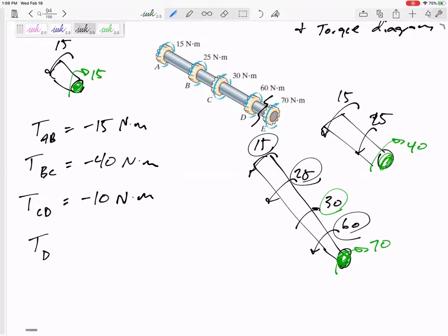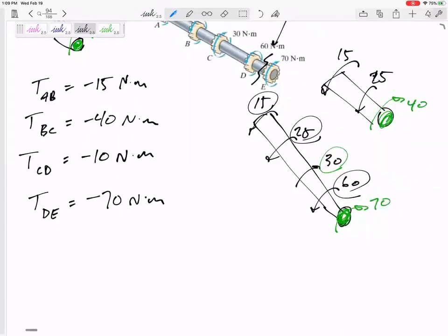Torque inside section DE is negative 70 Newton meters into the cut. But okay, would I have gotten that same thing if I had come from the other direction? Let's come from the other direction. So now I can't really see down the barrel of the cut. But now when I cut it here, I've got 70. How is that 70 drawn? Yeah, that 70 was drawn here. So what do I need at the cut right there? I need 70.